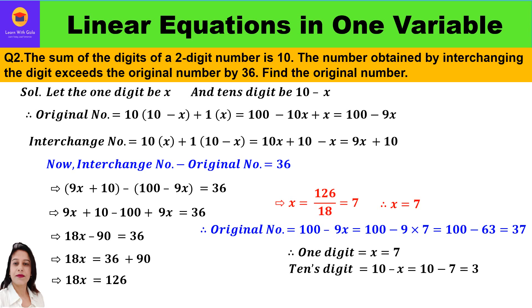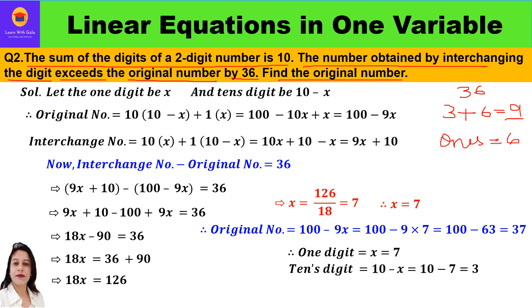Now the second question: the sum of the digits of a two-digit number is 10. The number obtained by interchanging the digits exceeds the original number by 36. Find the original number. For example, with 36 the digit sum is 3 + 6 = 9. If the one's digit is 6, the tens digit is 9 − 6 = 3. Using the same concept here, if the one's digit is x, the tens digit will be 10 − x.